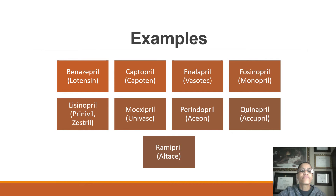Examples of ACE inhibitors — who can tell me what they all have in common? They all end in '-pril.' If you look, they all end in '-pril': benazepril, captopril, enalapril, and lisinopril.